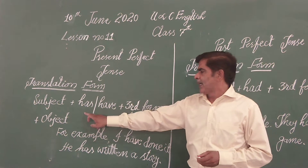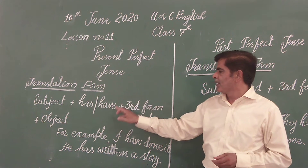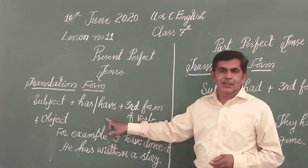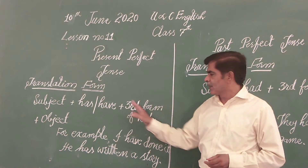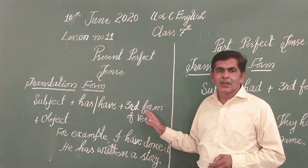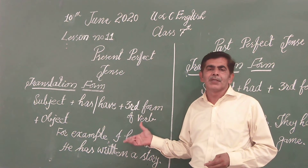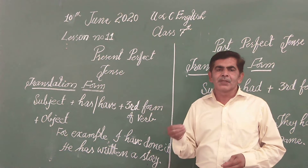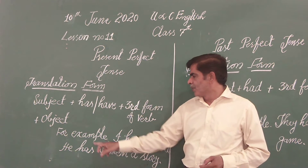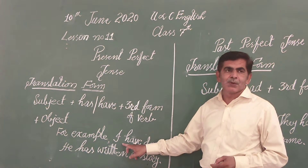We use 'have' with subjects like I, we, you, they, or a plural noun. The third form of the verb is used in perfect tenses. For example, I have done it — where the first person subject uses 'have' followed by the third form of the verb.